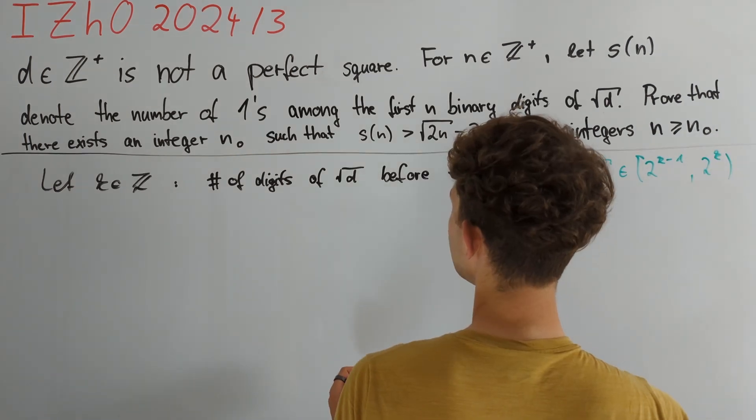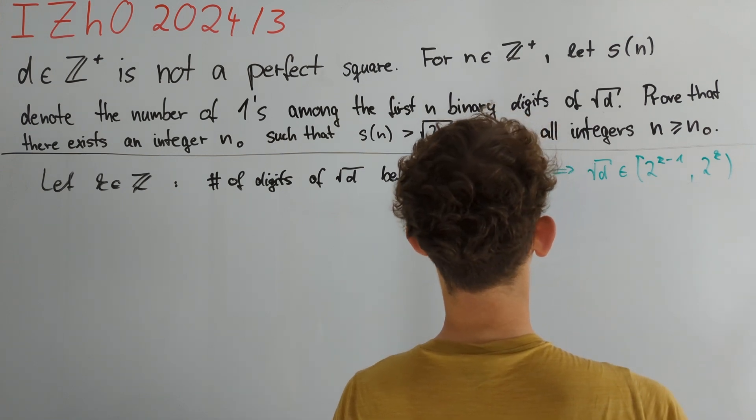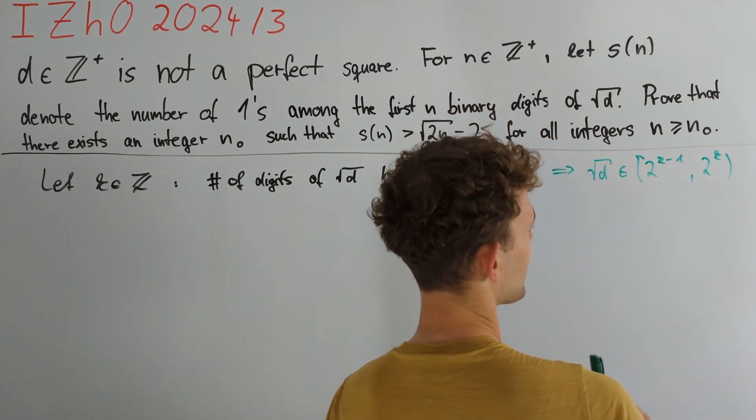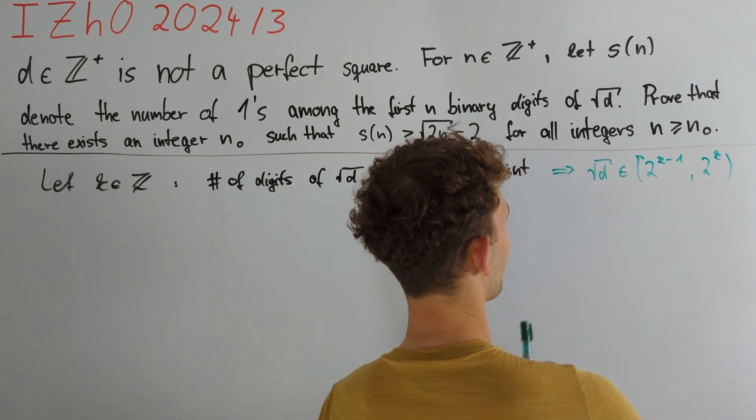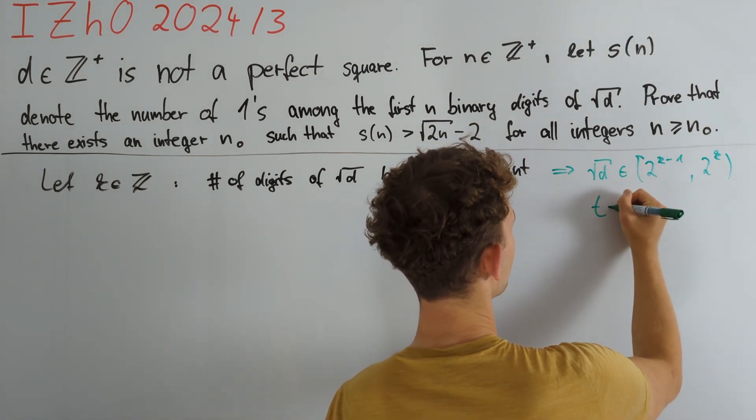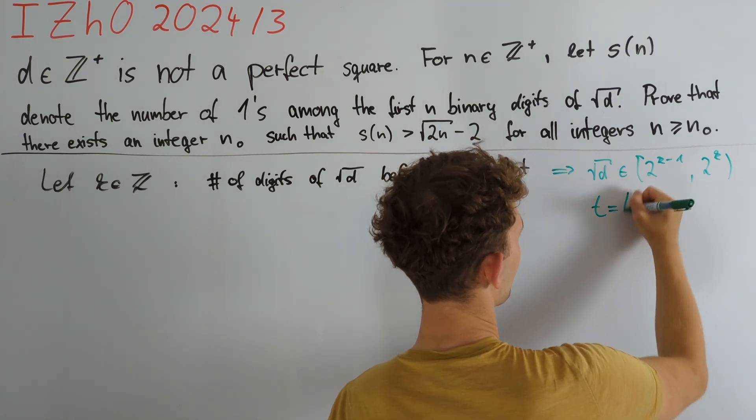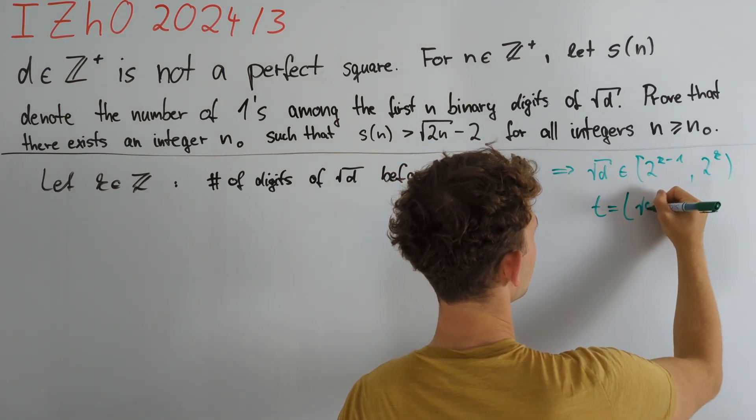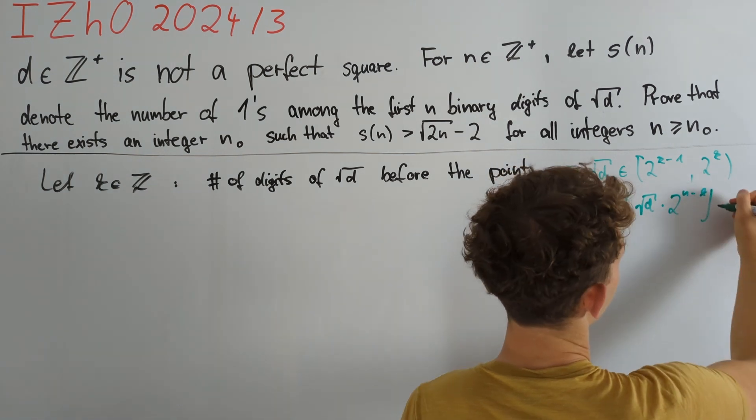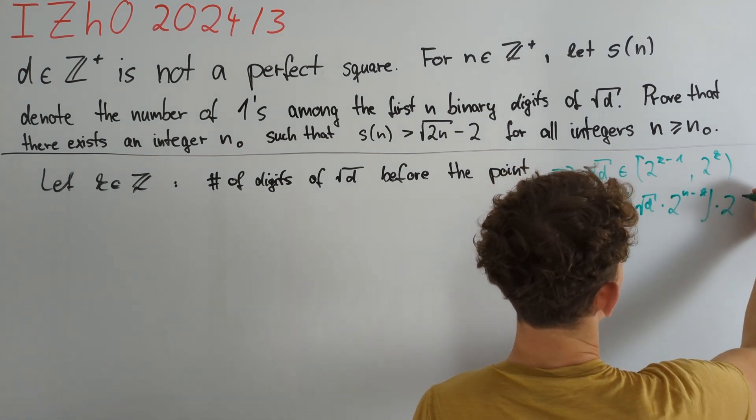Now we can define t as the number consisting of the first n binary digits of the square root of d. If n and k are equal then t will just be the floor of square root of d, and this brings us to the general formula that t is just the floor of square root d times 2 to the power of n minus k divided by 2 to the power of n minus k.